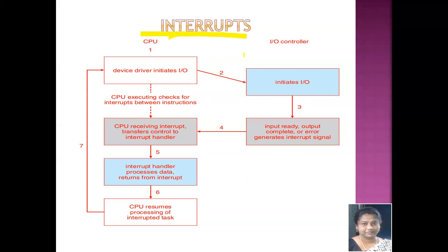When the CPU is interrupted, it stops what it is doing and immediately transfers control to a fixed location. What we are going to see in this flowchart is how, once an interrupt is generated, that interrupt is handled — what does the CPU do?